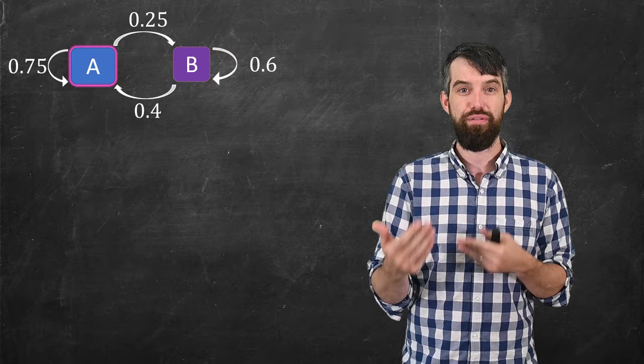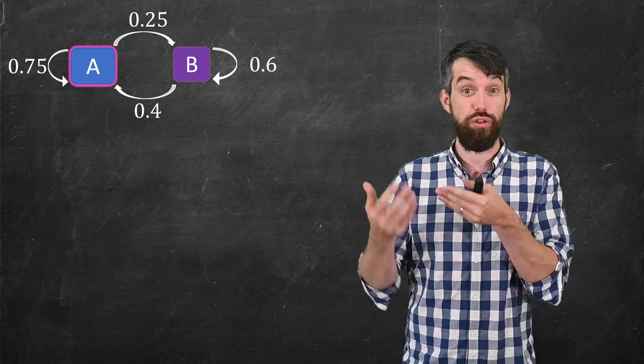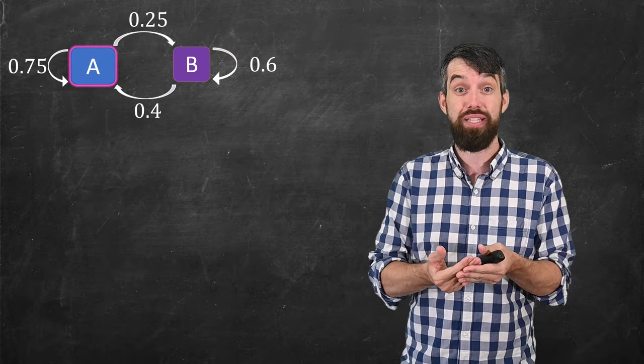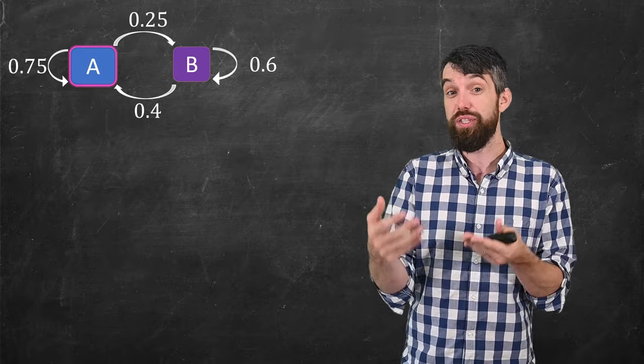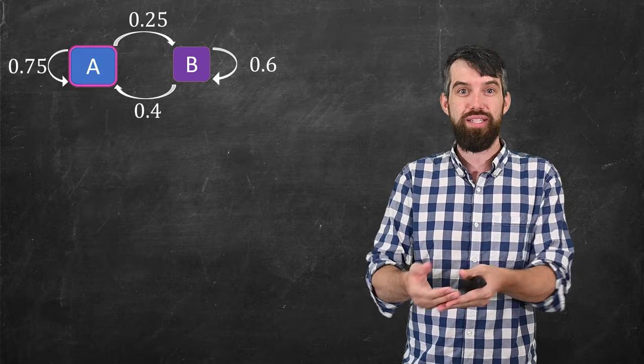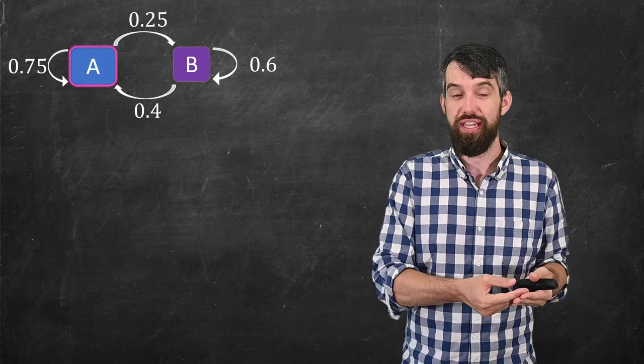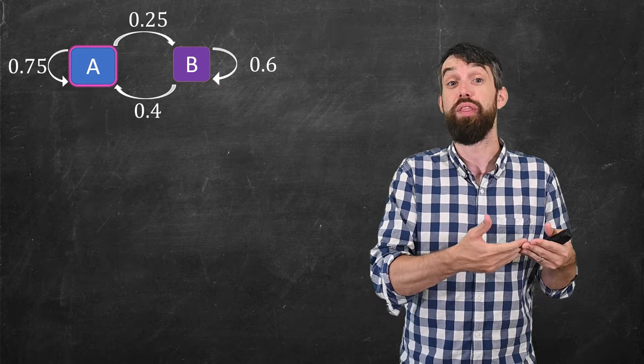So for example, the 0.75 that is on the arrow that goes from state A to state A represents that there's a 75% probability that state A in one iteration is going to transition to being state A in the next.